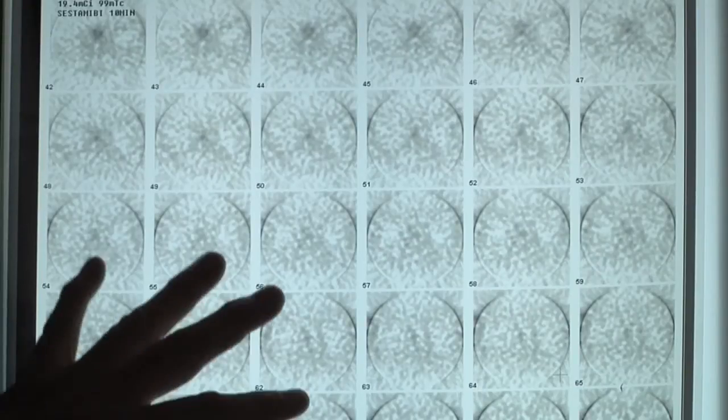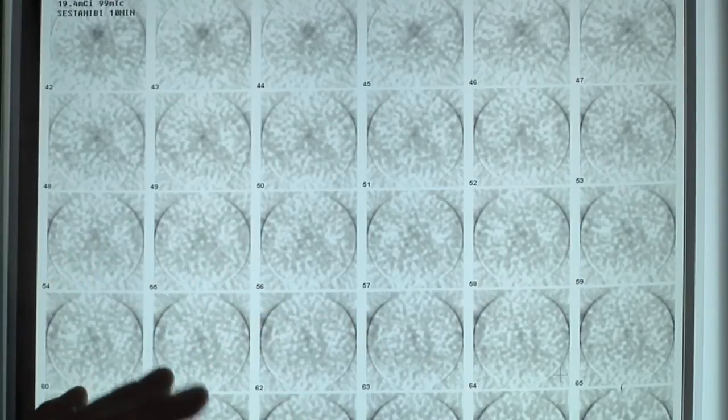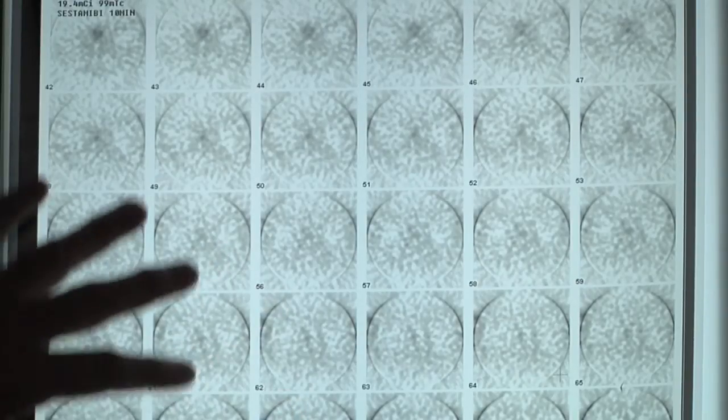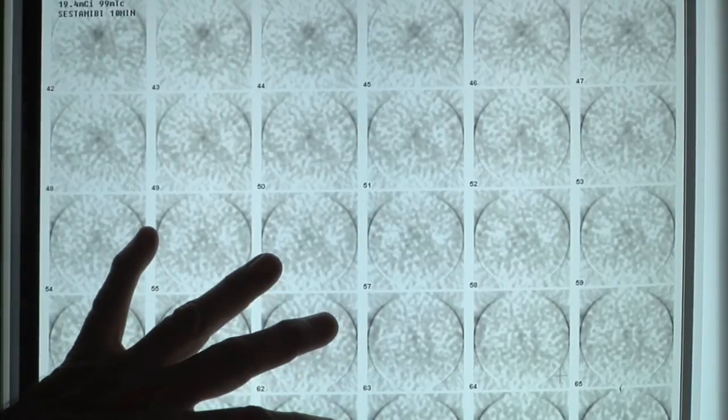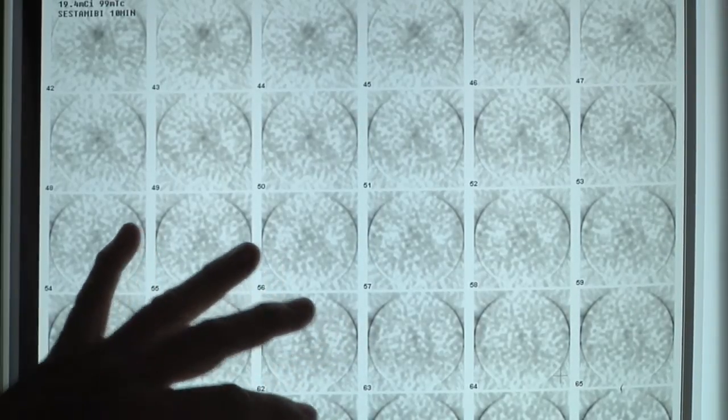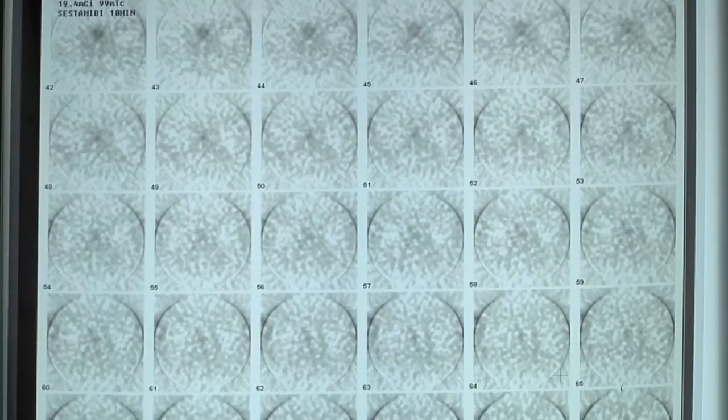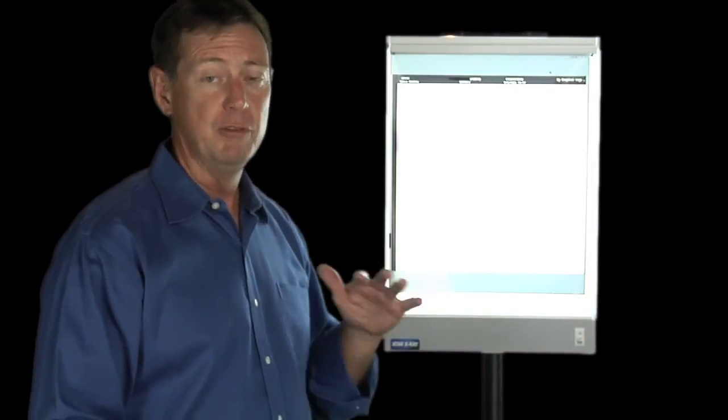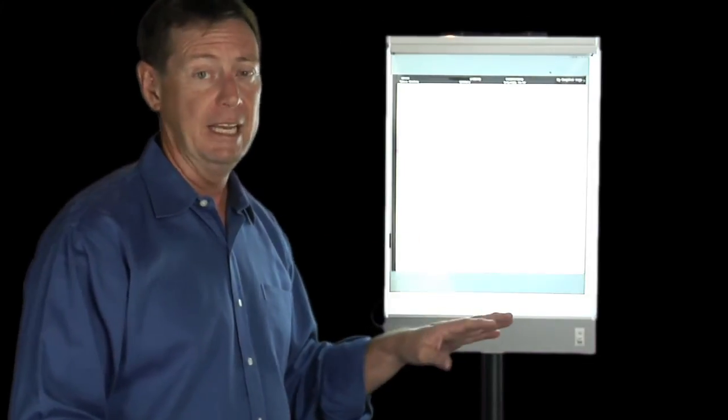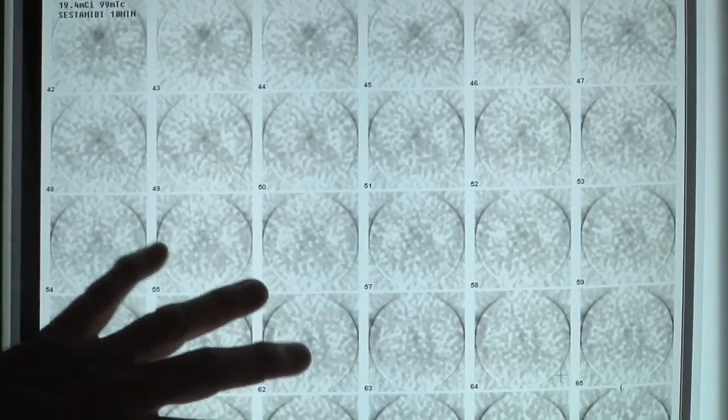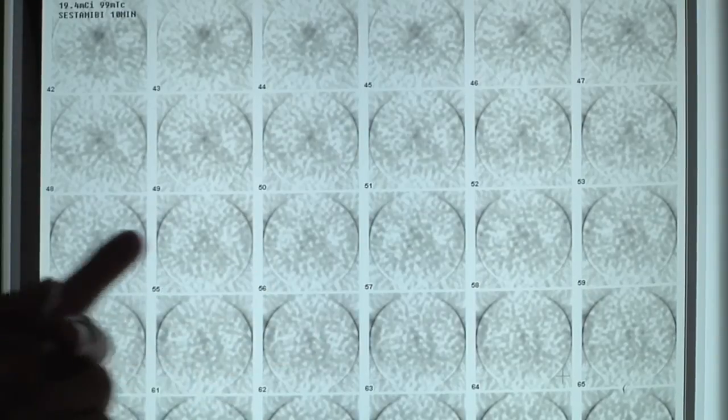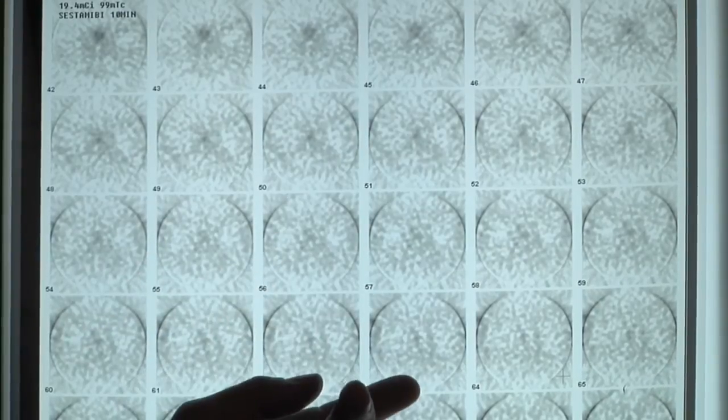This is the third and final example of a Sestamibi scan, what to look for, what not to look for. All these blurry pictures are, this is called SPECT scanning, S-P-E-C-T. It's not a very good technique. We never use this technique. It's not good. We gave up on this over a decade ago. As you can see, you've got a series of pictures, all of which are blurry. There's no useful information here.